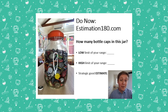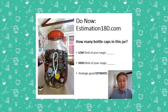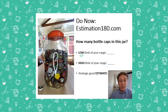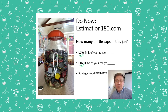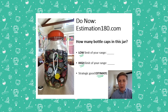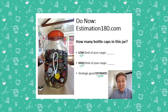To start off, we're going to do a do-now together. This is based off of the website Estimation 180. I want you to think about how many bottle caps are in this jar. Look on the side — there is one bottle cap there to show you the size. To make a good estimate, think of a reasonable low amount and a high amount for your range, then come up with a good estimate within that range. At the end of this video, I'm going to play myself counting every single one of those bottle caps so you can see if your estimate was correct.